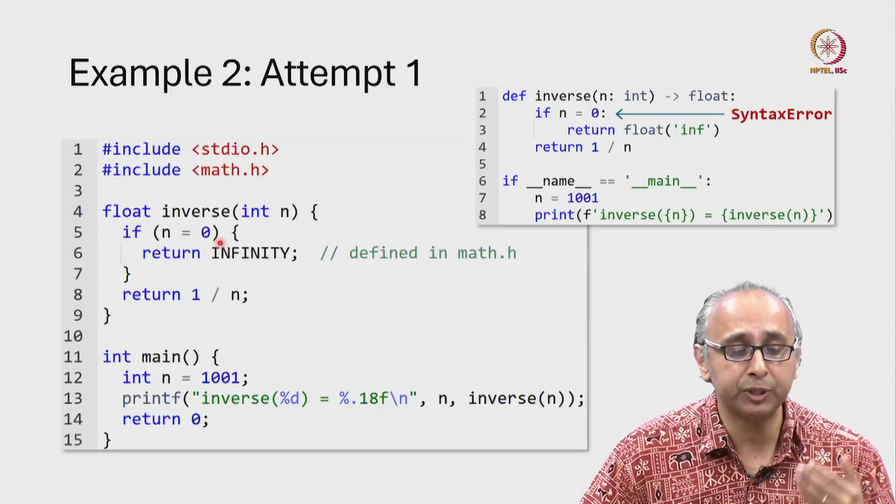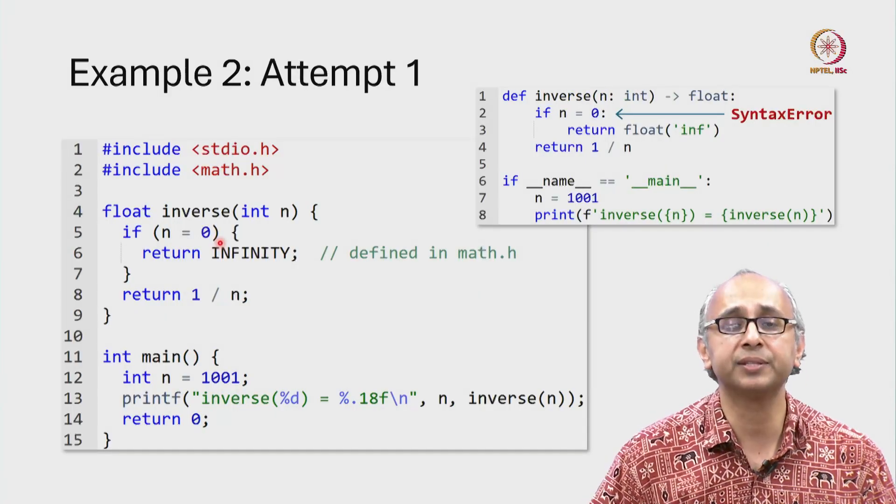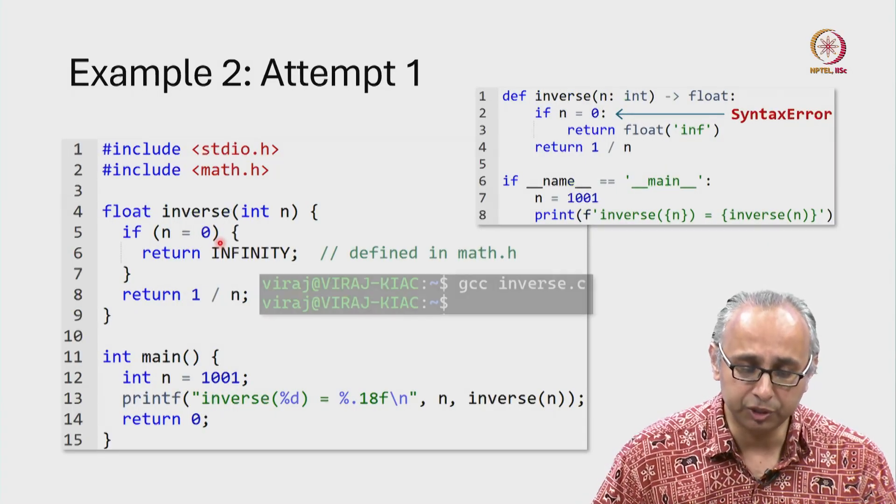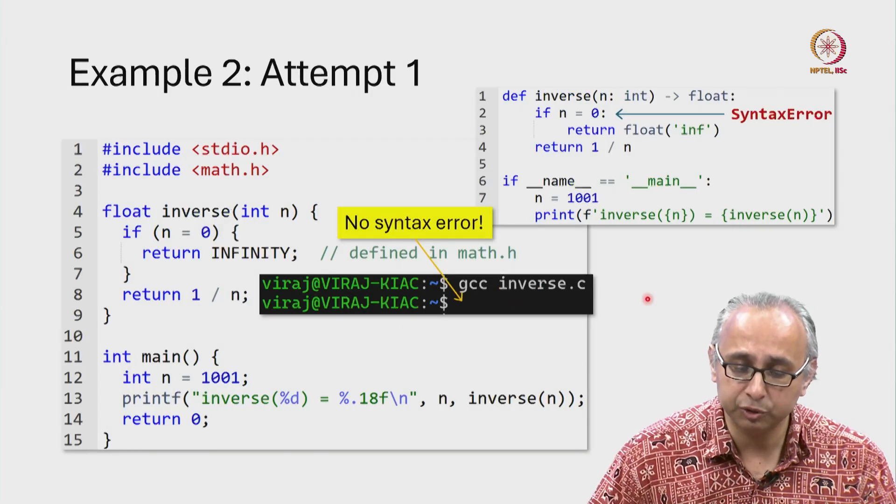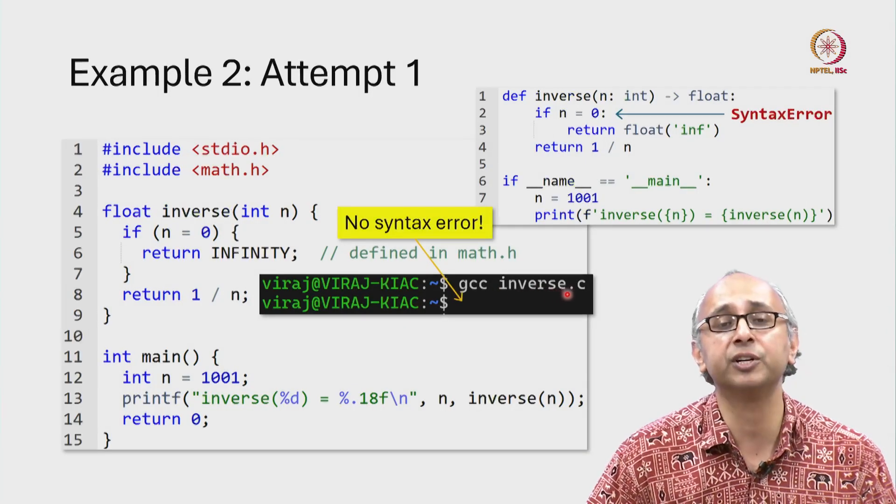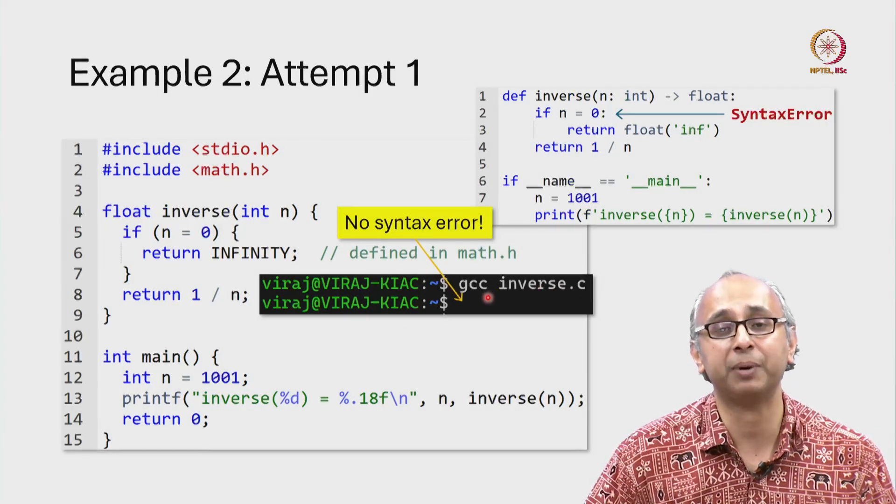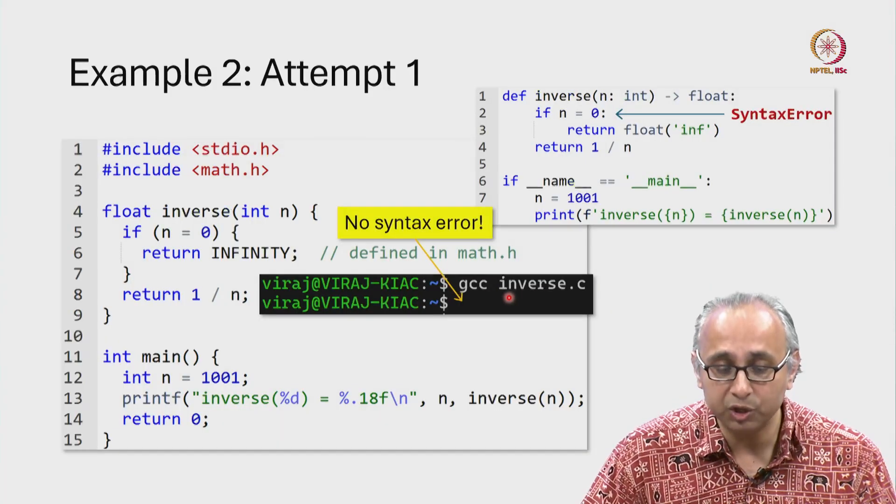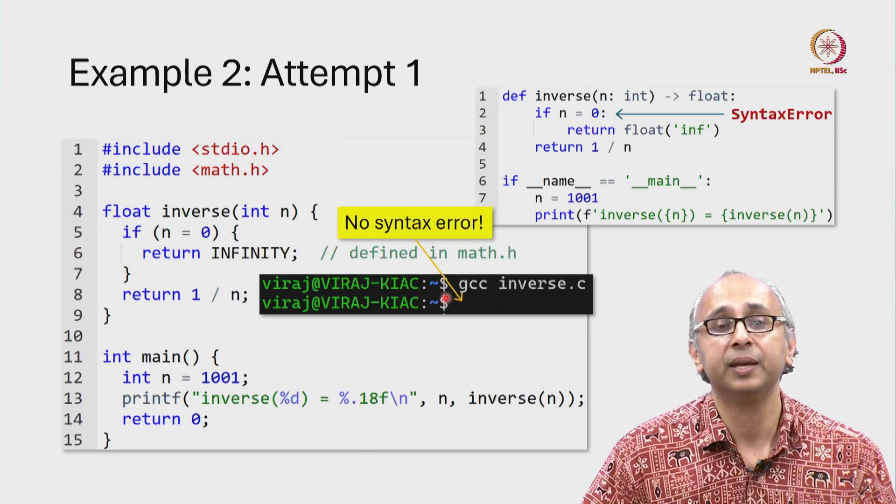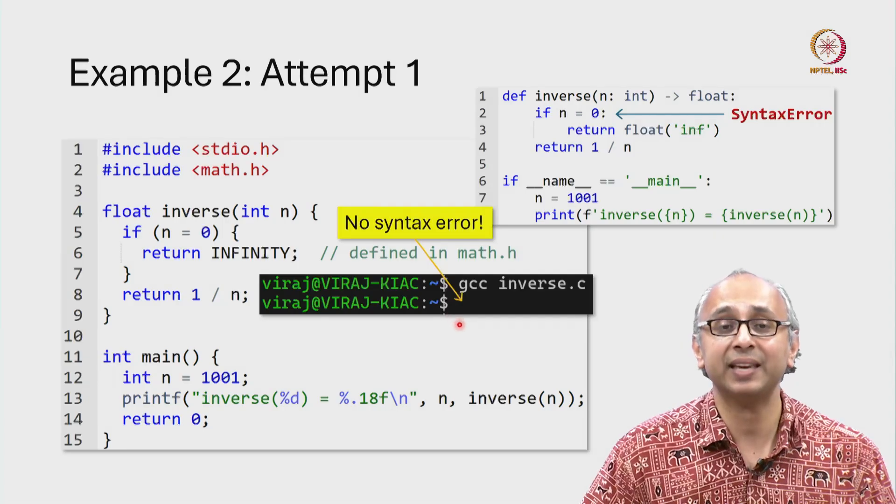What would happen if we try to compile this C code? Here's a screenshot where I have tried to compile this file inverse.c using the gcc compiler and notice that I get no error message on the next line. There is no syntax error.